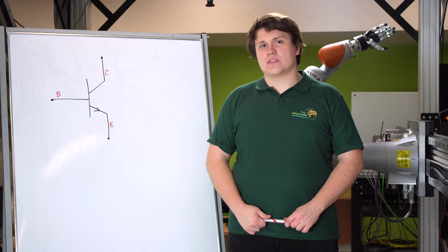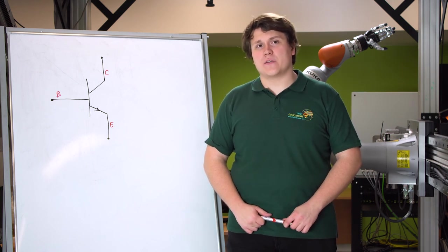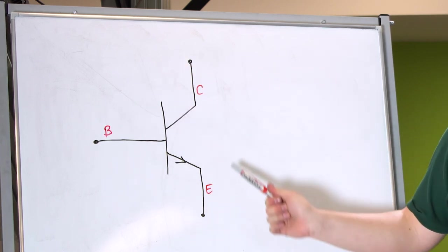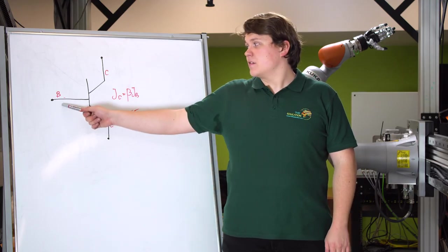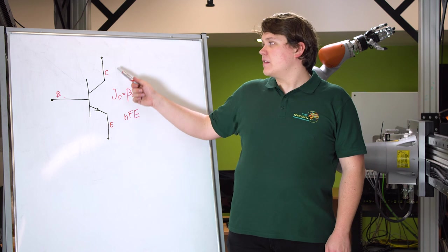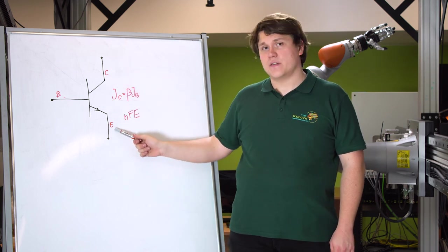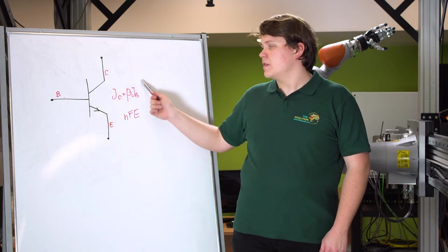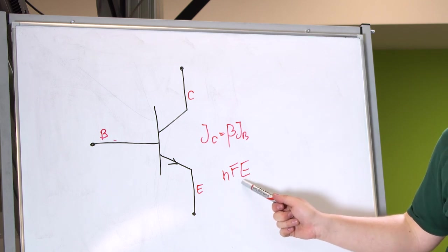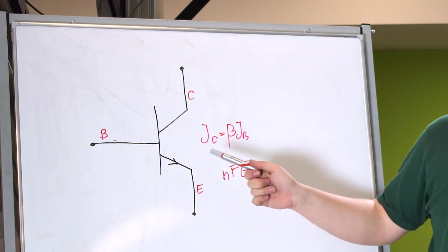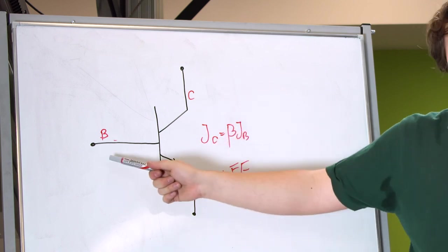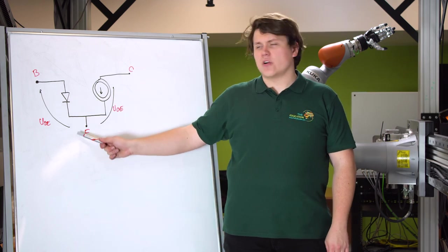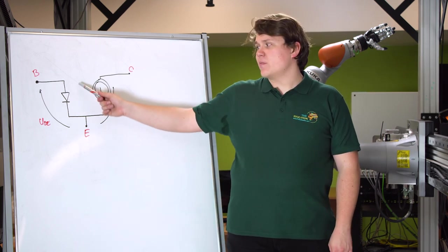There are many types of transistors with different symbols, but first we will talk about bipolar transistors. They have a base, collector, and emitter. Base current flows from base to emitter, and collector current also flows to the emitter. Between those two currents there is a special relationship called hFE in catalogs — this tells us how much greater the current through the collector will be compared to the base. We also have to pay attention to the fact that the base-emitter connection behaves like a normal diode, and the voltage we are interested in is between emitter and collector.